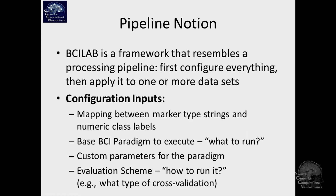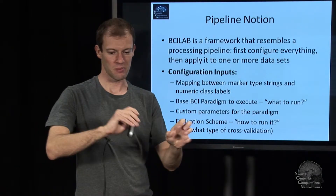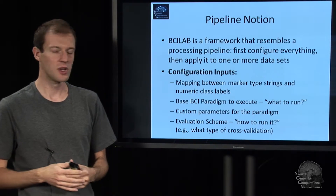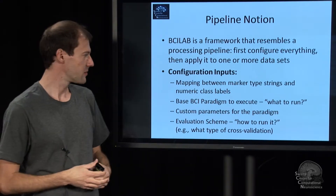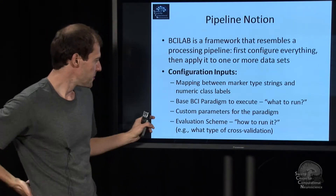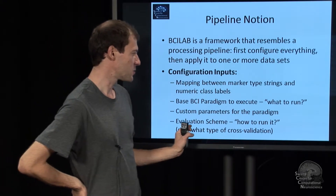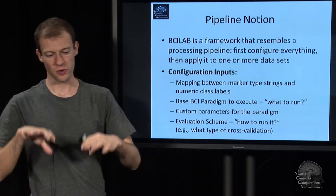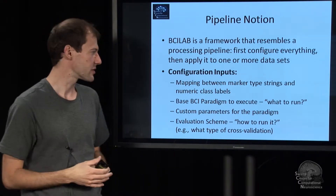The mapping is usually just: this string relates to this number, that string relates to that label number, and so on. Furthermore, you will want to say which BCI paradigm you want to execute — what to run and what parameters to pass in. You never start from nothing; you're usually starting with a paradigm, like 'I want to use windowed means, here are my parameters.' The last input is the evaluation scheme — what kind of cross-validation: nested, not nested, block-wise, randomized, and so on.